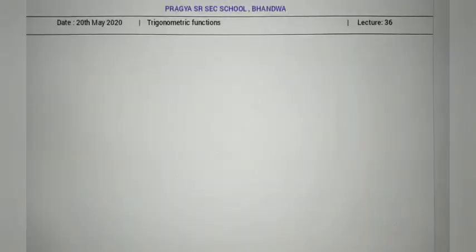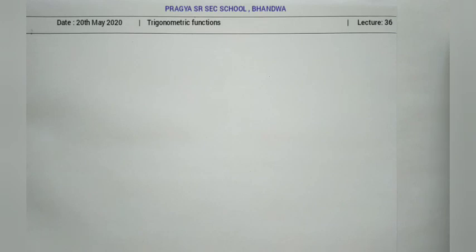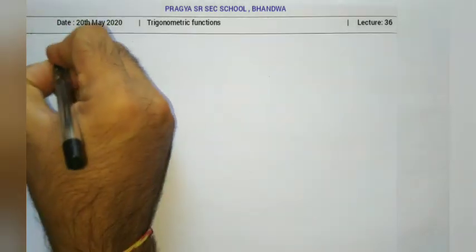Good morning students, today is 20th May and this is maths lecture for class 11 students, lecture number 36. In this lecture we will continue discussion on trigonometric functions. In the last lecture we discussed angle measurement: anti-clockwise is positive, clockwise is negative, and degree measurement where 1 degree equals 60 minutes and 1 minute equals 60 seconds. Now in today's lecture we will discuss the second unit of measurement of angle, that is radian measurement.